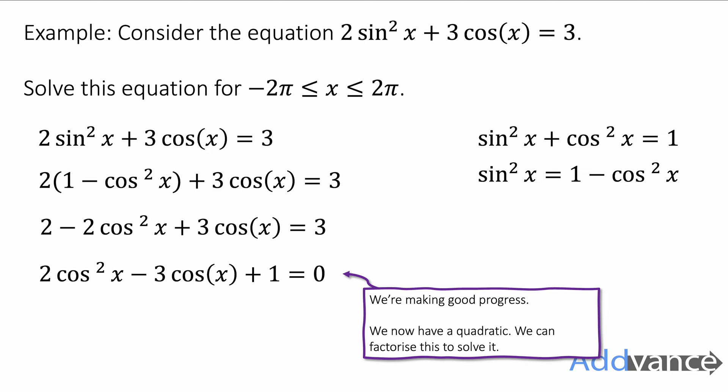If you're not confident with how to factorize that you should watch my video on factorizing harder quadratics which I'll link in the description below. But if you're happy then all we do is factorize like this. You've got (2cos(x) - 1)(cos(x) - 1) = 0. If you're not convinced that works, if you're not happy with the math there, I would just like you to expand the double bracket and convince yourself that it does expand to be the same quadratic. But if you're happy let's continue.